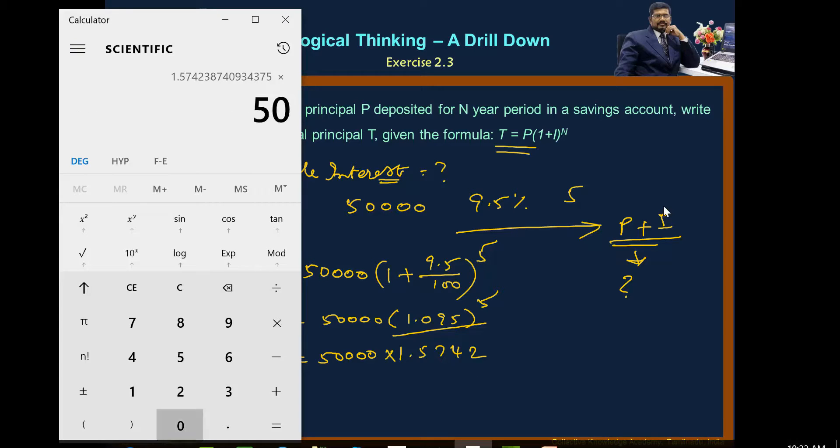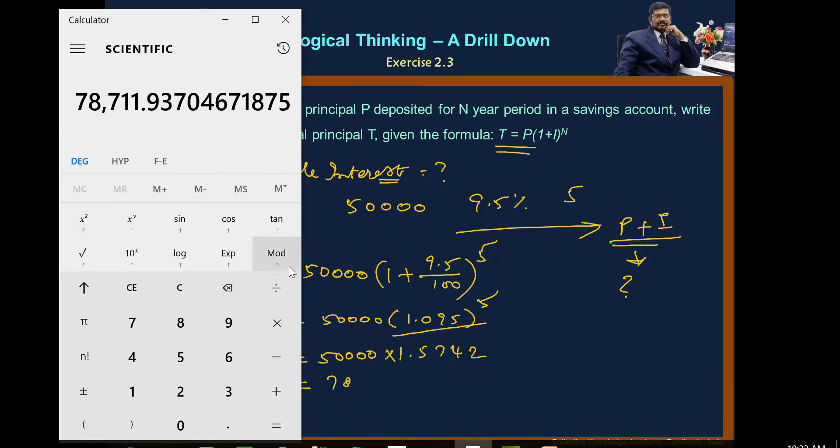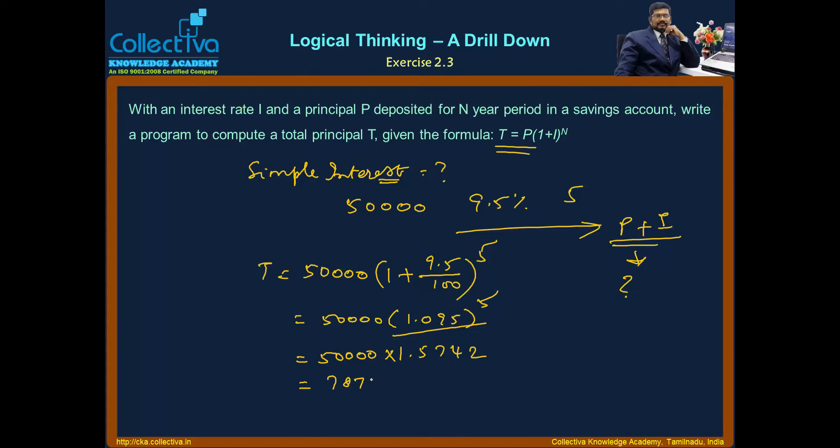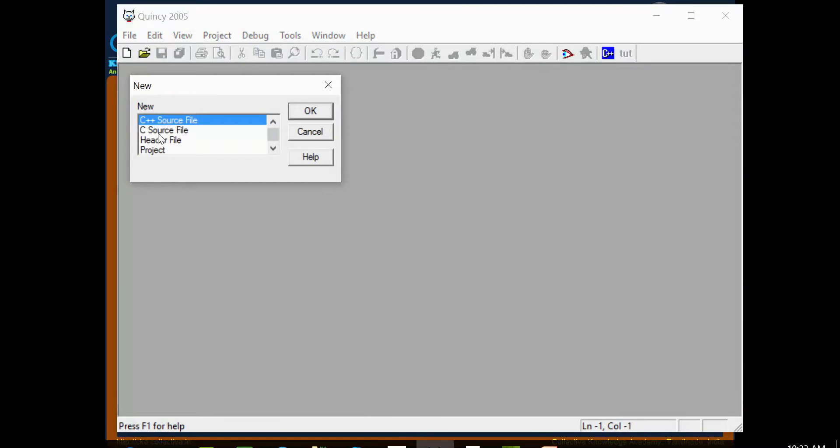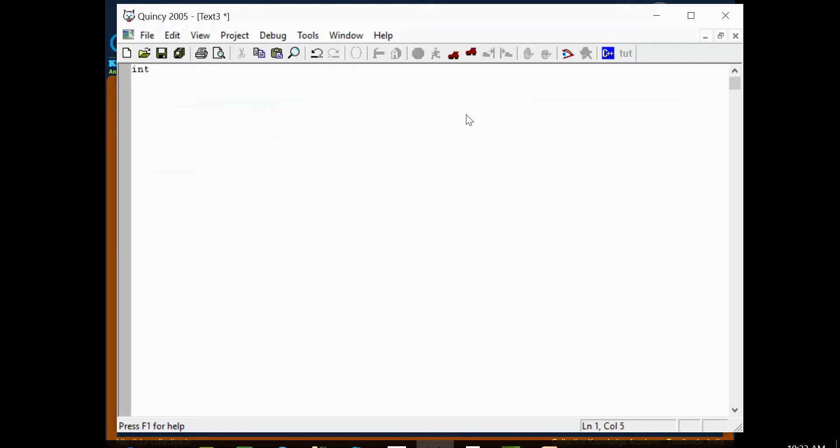The result is 78,711.93. Now to write this in a program, first we'll declare the values we need using float.